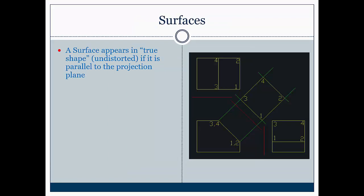Surfaces. A surface appears its true shape, meaning undistorted, if it is parallel to the projection plane. So for example, in this image we have this front surface right here undistorted. Since we have an incline, the only way that we can see its true shape is by looking at an auxiliary view.